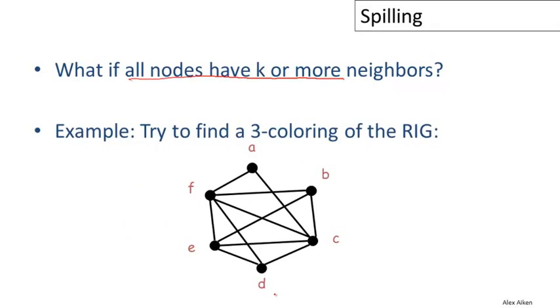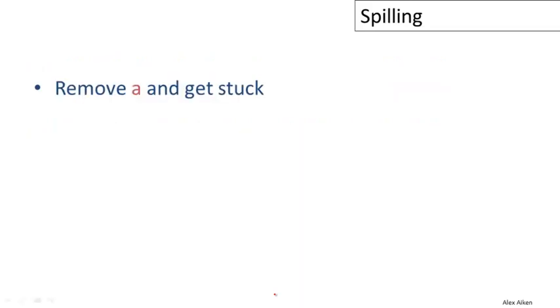Let's think about how to find a 3-coloring of this graph. If we apply the heuristic, we'll remove A from the graph, but then we're going to get stuck. Once you take A out of the graph and its edges out, every node that's left has more than, has three or more neighbors.